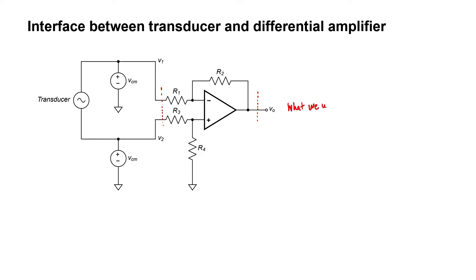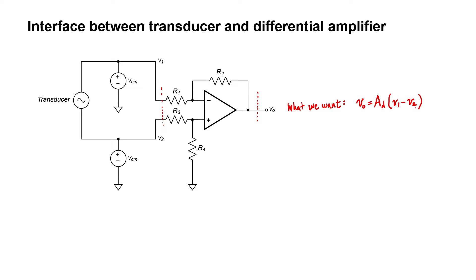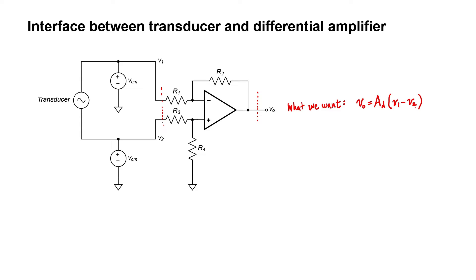In other words, what we want is for the output voltage to depend only upon the difference between V1 and V2. We don't want the output voltage to depend upon either V1 or V2 alone because, in such a situation, it would depend upon the common mode voltage. Let's analyze the differential amplifier I've just drawn and see if we can make this condition come true.